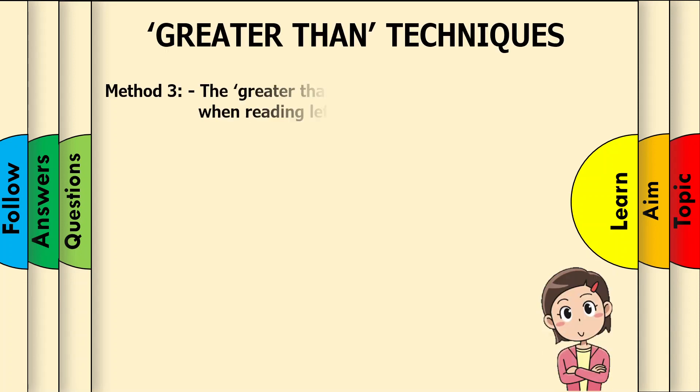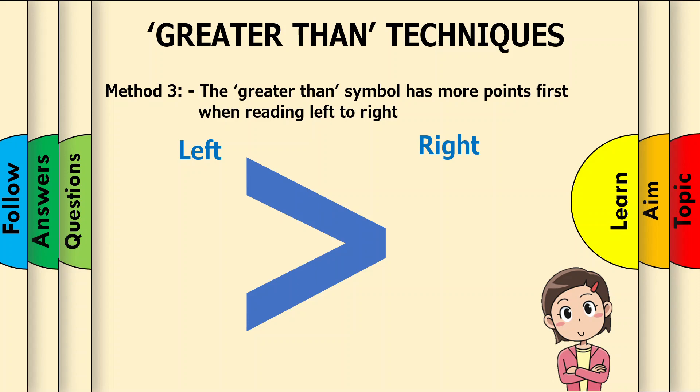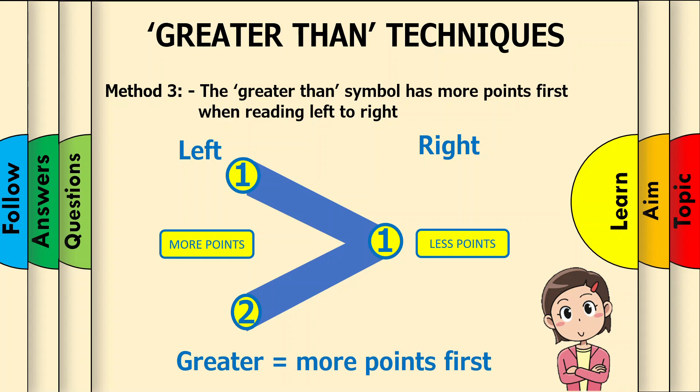Method 3. The greater than symbol has more points first when reading it from left to right. Left has two points and right has one point. More points, less points. Greater equals to more points first.